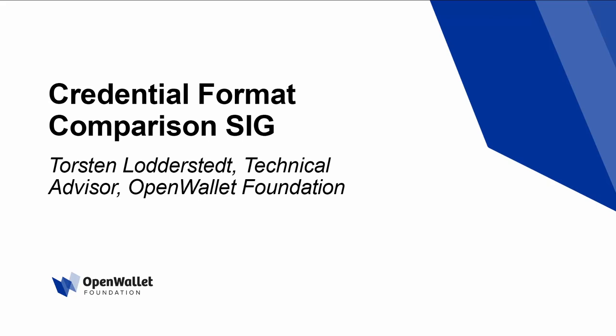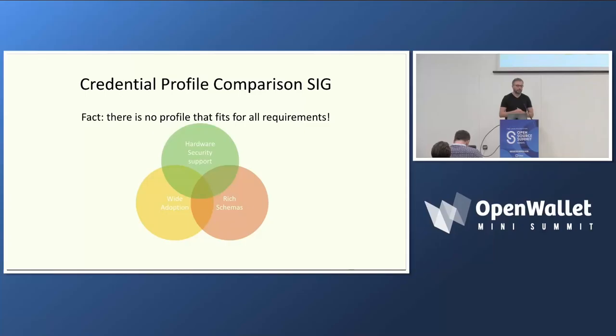I would like to give you an overview on two other initiatives that we are conducting at Open Wallet Foundation. The first one is the Credential Profile Comparison Special Interest Group. We have two mechanisms at OWF to have longstanding or short-term activities to investigate certain topics. And the Credential Profile Comparison Special Interest Group, as the name suggests, tries to compare different credential profiles.